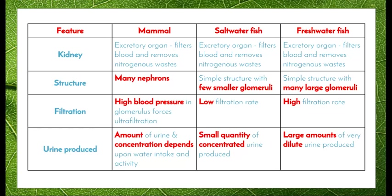In saltwater fish, the kidneys are again an excretory organ that filters blood and removes nitrogenous waste. They have a simple structure with a few smaller glomeruli. Blood enters the kidneys under low pressure, so a low filtration rate takes place. Saltwater fish produce a small quantity of concentrated urine — water is retained by the fish in order to maintain water balance within the cells, and much of the ammonia is excreted.